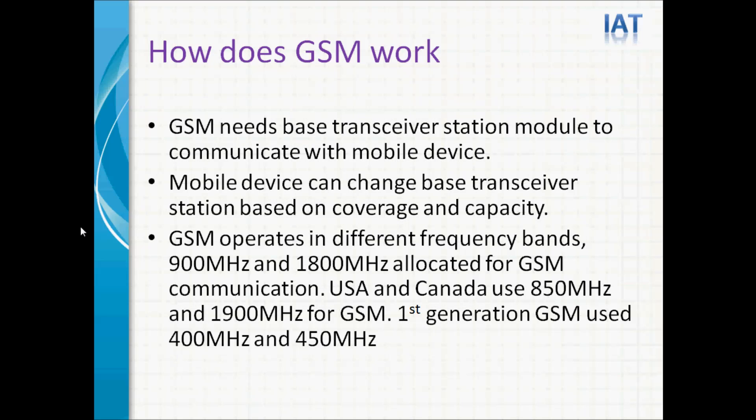How does GSM network work? GSM needs a base transceiver station to communicate with mobile devices. Mobile devices can change base transceiver stations based on signal power and capacity. GSM operates in different frequency bands — 900 MHz and 1800 MHz are allocated for GSM communication. In the USA and Canada, they use 850 MHz and 1900 MHz for GSM. First generation GSM used 400 MHz and 450 MHz.